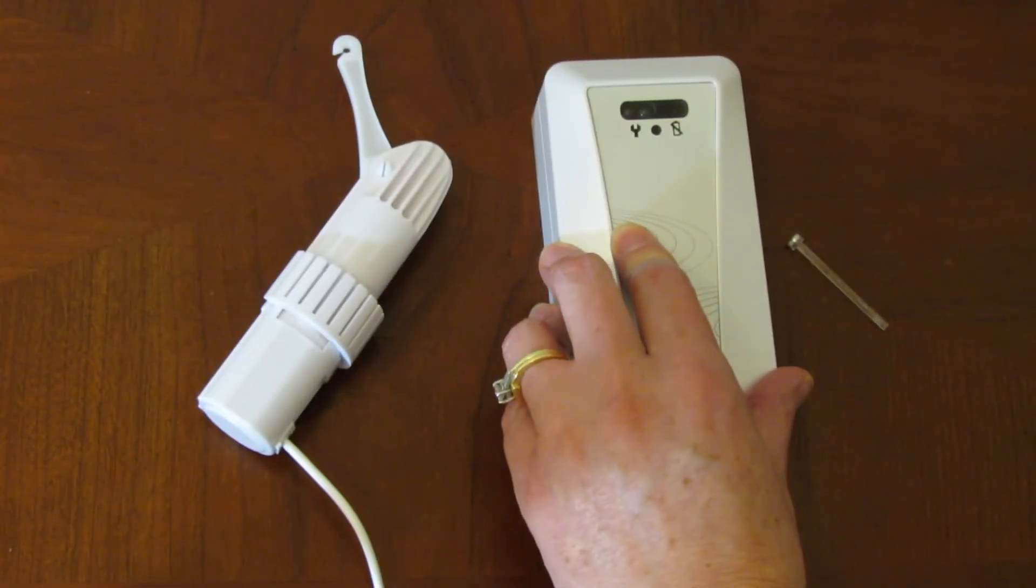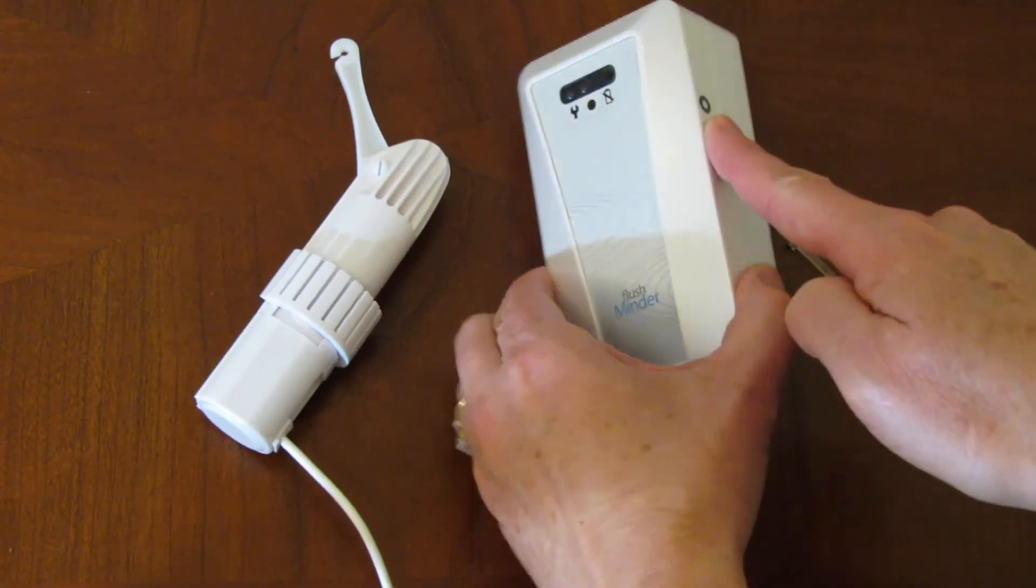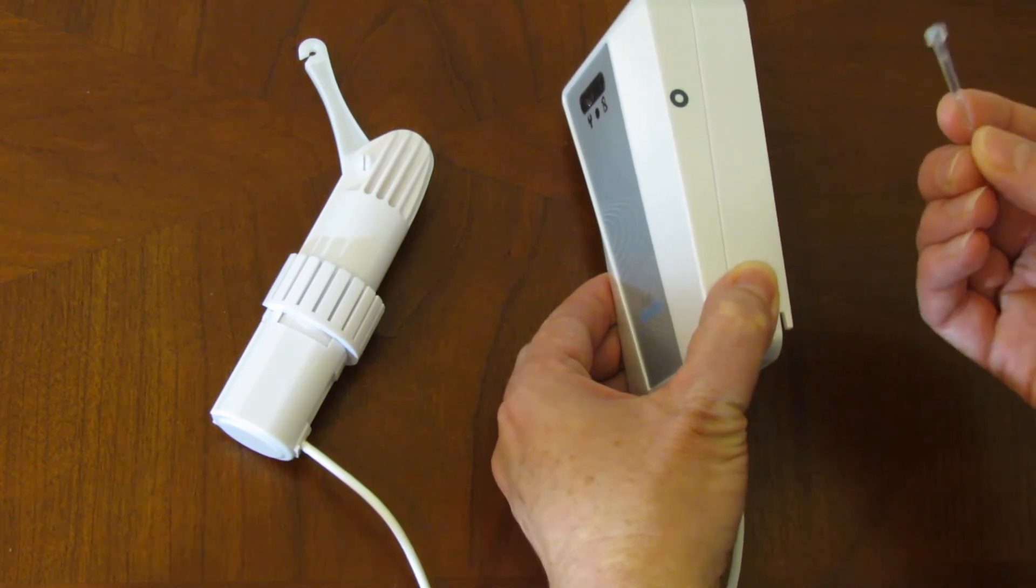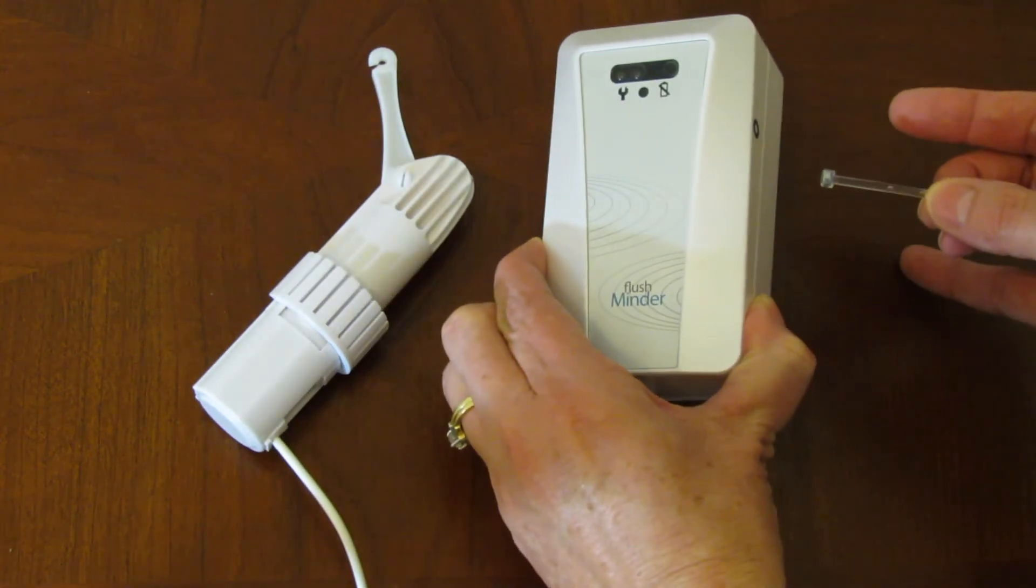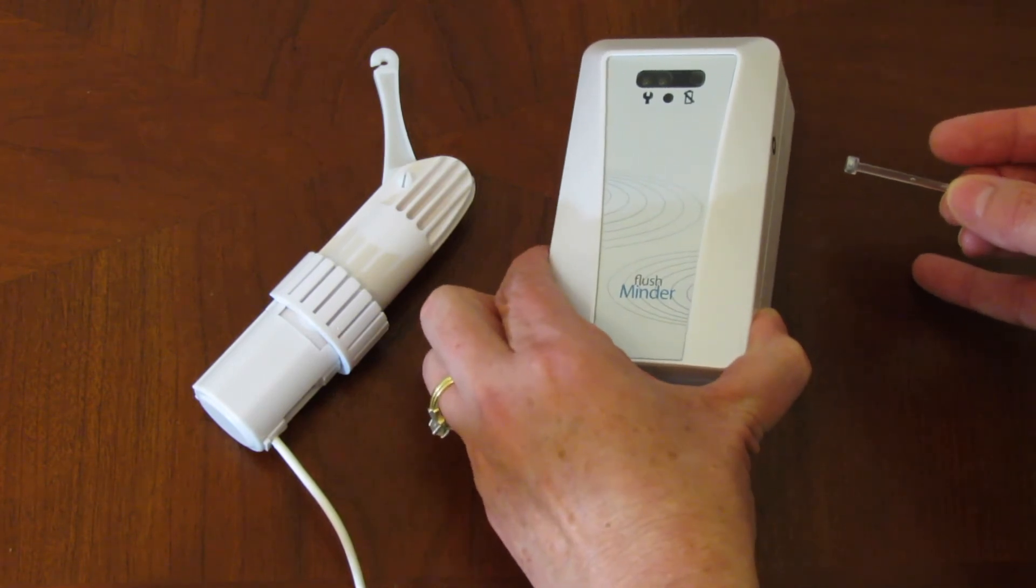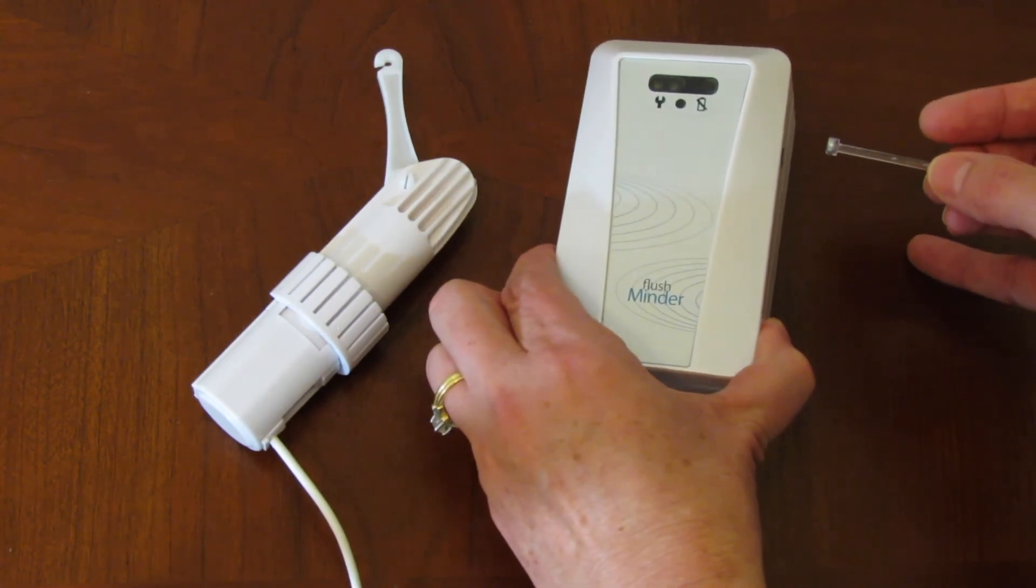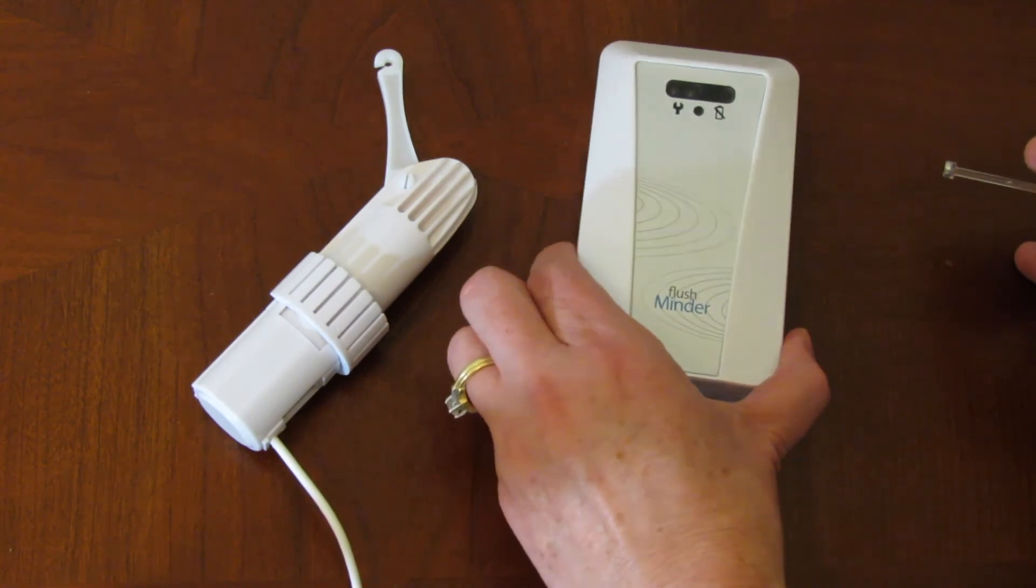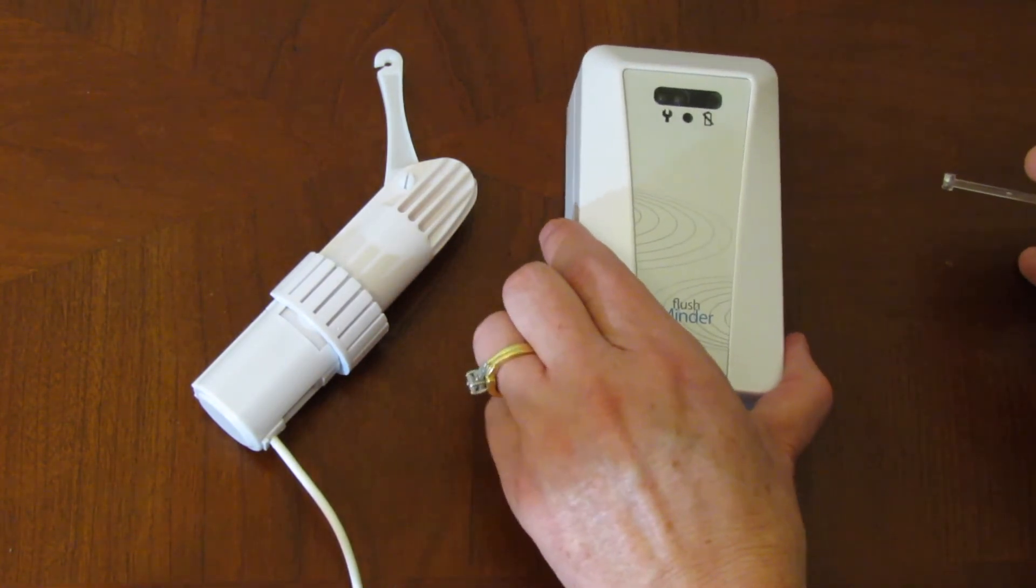Let's take a closer look at how to adjust the half-flush cycle. To the right of the sensor is the magnetic target. Take the magnetic wand and hold it to the target until the arm moves to the desired half-flush position. To stop the lever arm at this position, remove the wand from the target. Remember, the full-flush cycle will be set automatically.